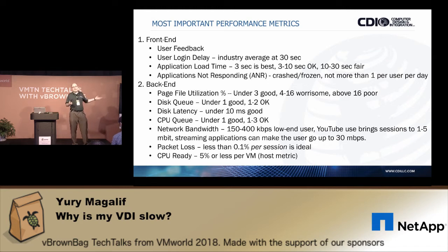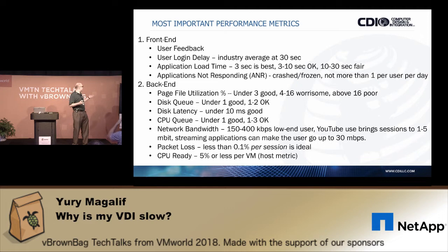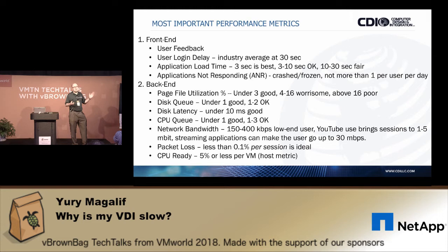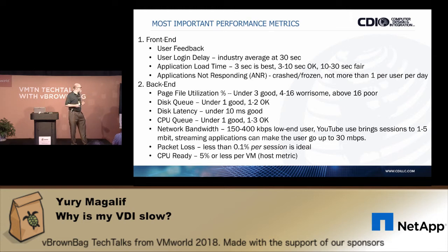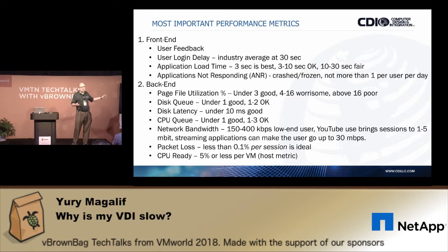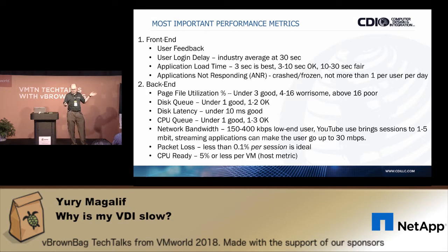Then you go to the back-end metrics, which are purely technical: page file utilization, disk queue, disk latency, CPU queue, network bandwidth, packet loss, and CPU ready — plus a few others. Once you look at these metrics and know what the thresholds are — which I'm listing here as general industry thresholds — you can act accordingly.